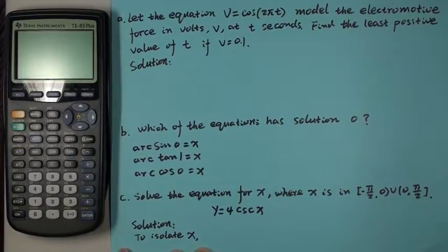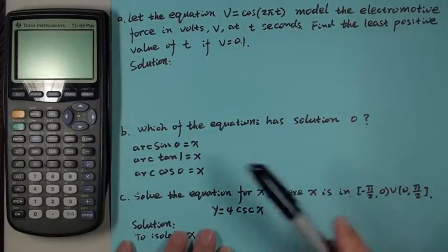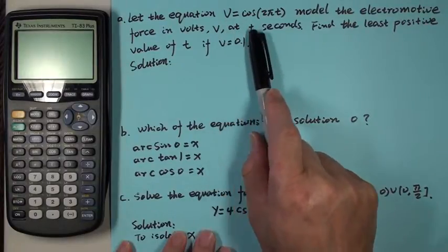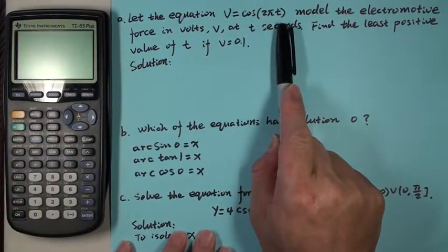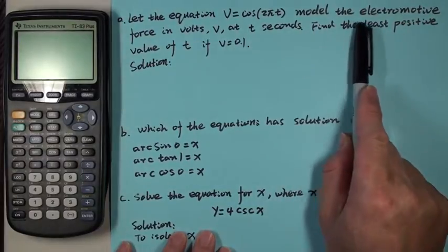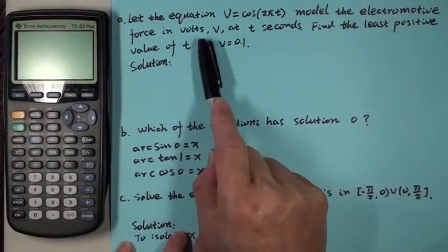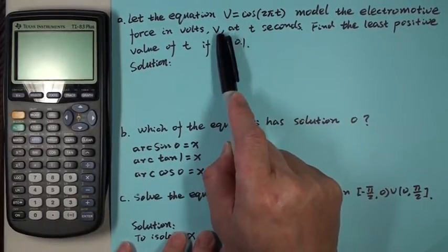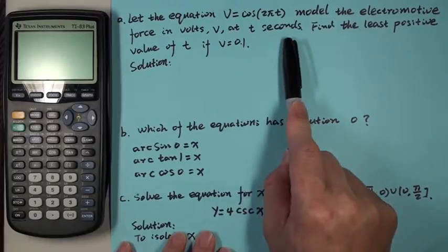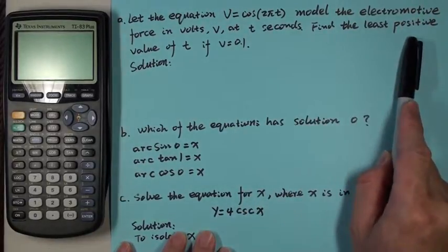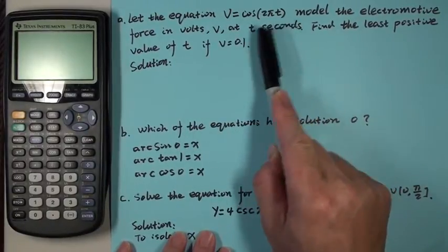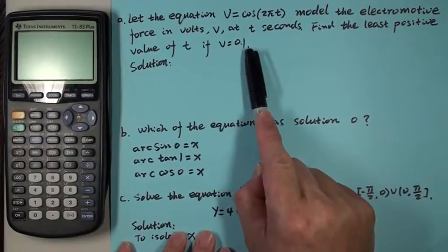In this lecture, we'll look at a few examples. The first one is to let the equation V equals cosine 2πT model the electromotive force in volts V at T seconds. Find the least positive value of T if V is 0.1.